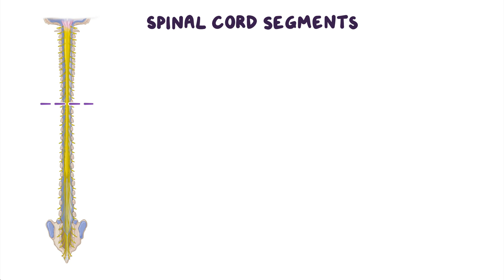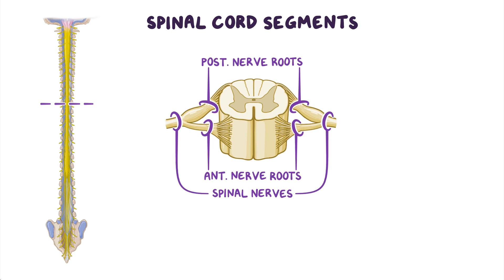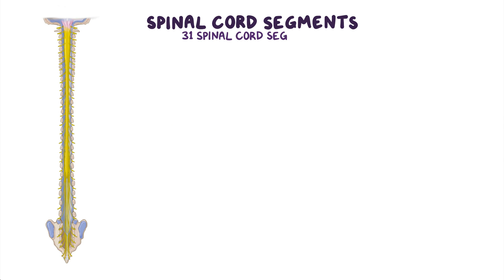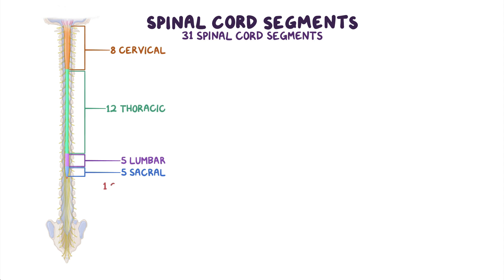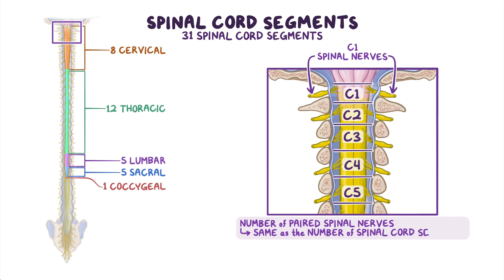The spinal cord can be divided into spinal cord segments. One spinal cord segment gives rise to the anterior and the posterior nerve roots, which come together to form a spinal nerve on each side of the spinal cord. There are 31 spinal cord segments: 8 cervical, 12 thoracic, 5 lumbar, 5 sacral, and 1 coccygeal. A spinal nerve pair shares its name with the spinal cord segment it arises from, so the spinal nerves arising from the C1 spinal cord segment are named the C1 spinal nerves. Logically, the number of paired spinal nerves is the same as the number of spinal cord segments.